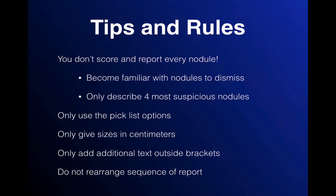Some tips: there is a separate talk about an approach to thyroid nodules, and I'd emphasize again the key thing is you don't need to score and report every nodule — that could take a very long time. Just become familiar with the nodules that you can dismiss and describe the four most suspicious nodules. Check out that video if you haven't already. After that, the rules are pretty simple: don't change the field names, only use the pick list options, give sizes in centimeters. If you need to add additional text, that's fine — do it outside the brackets, and don't rearrange the sequence of the report that your institution has agreed upon.